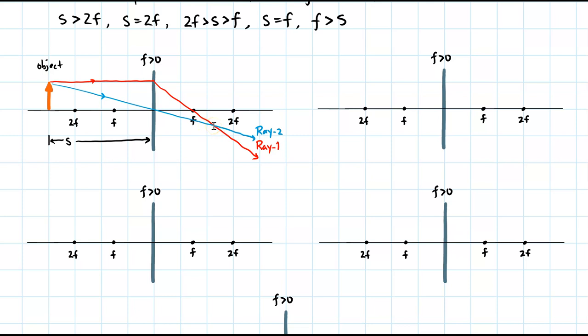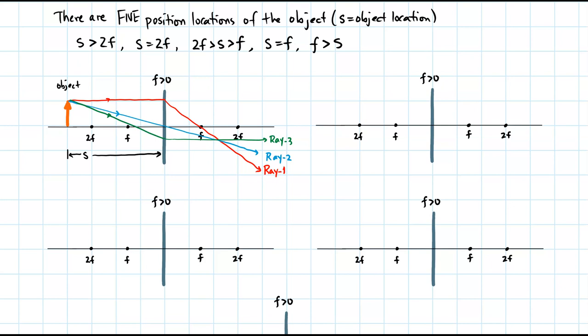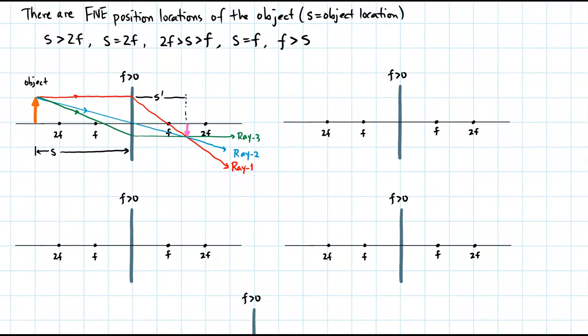Rays that cross form an image. Ray number three in green goes through the focal point and then parallel to the central axis. Where all three rays converge, the image is formed. The image of the arrow object is now an upside-down pink arrow located at S prime. The image is inverted, smaller than the object, and real because it's on the opposite side of the lens from the object.